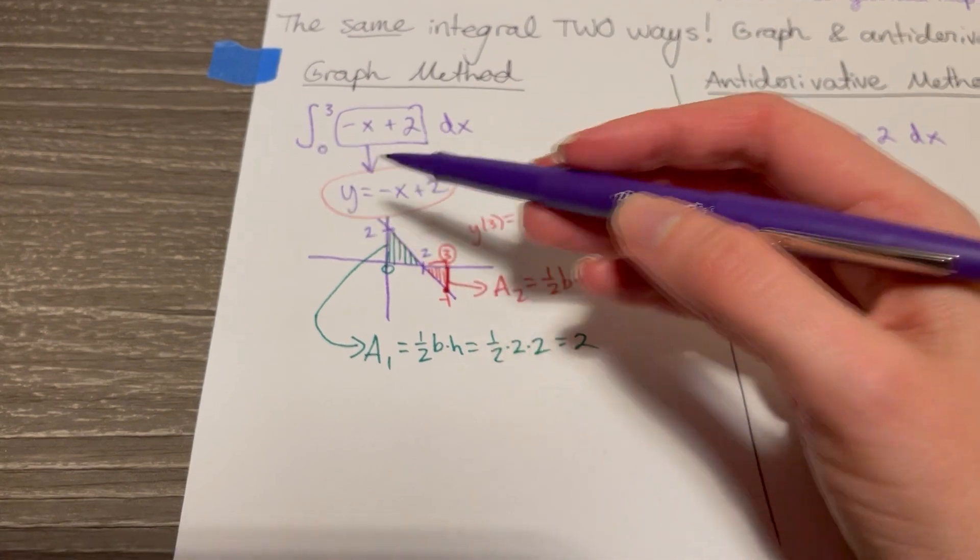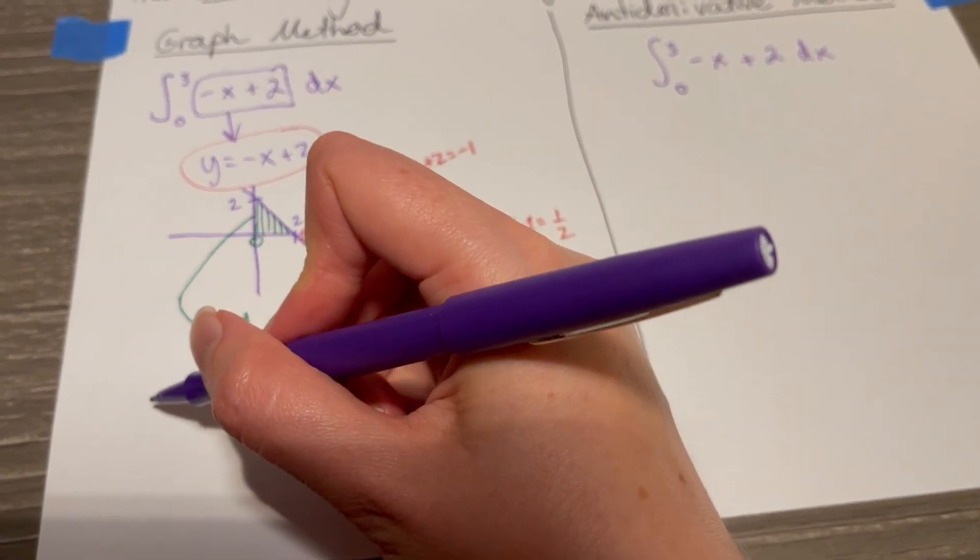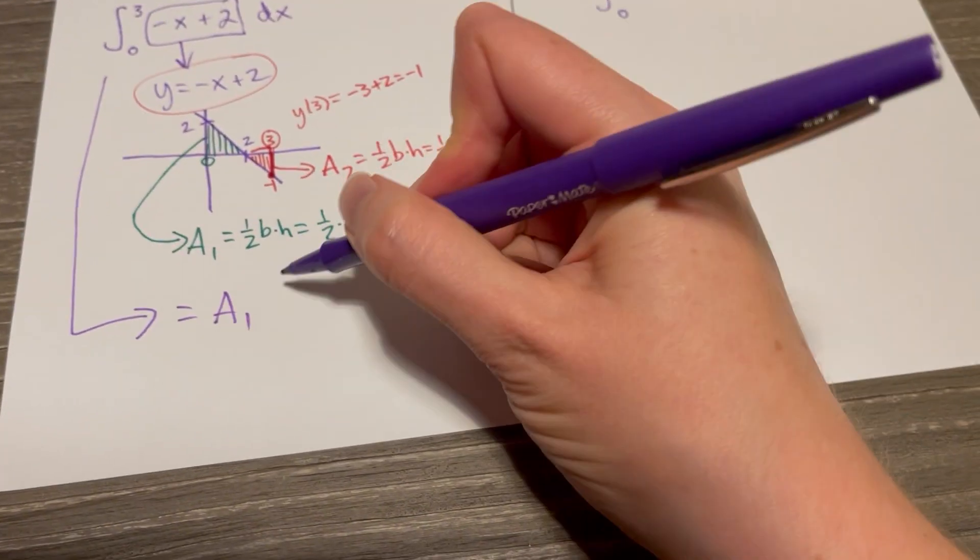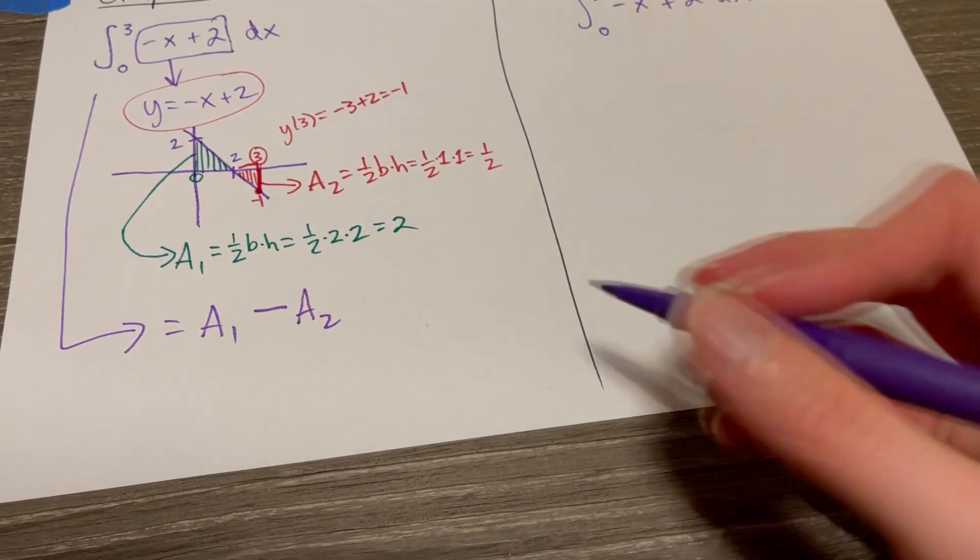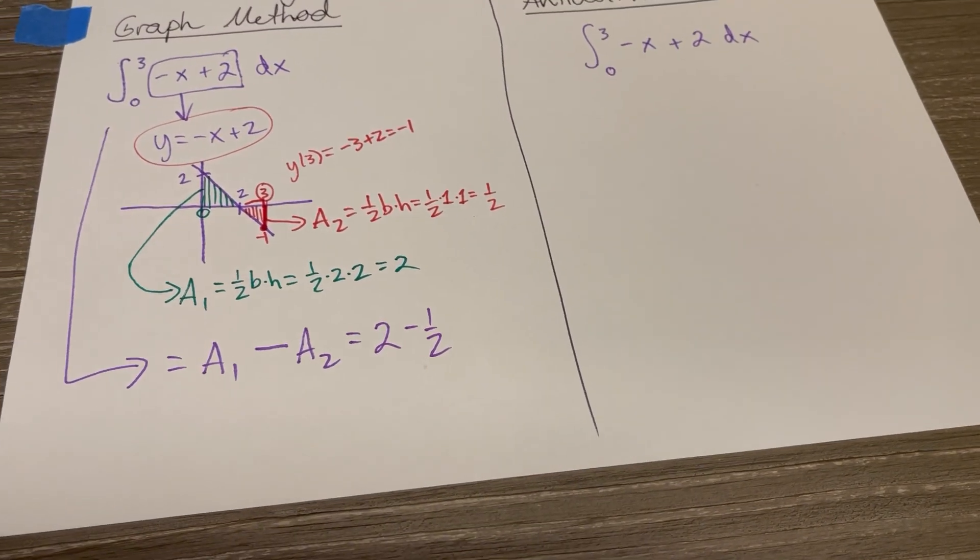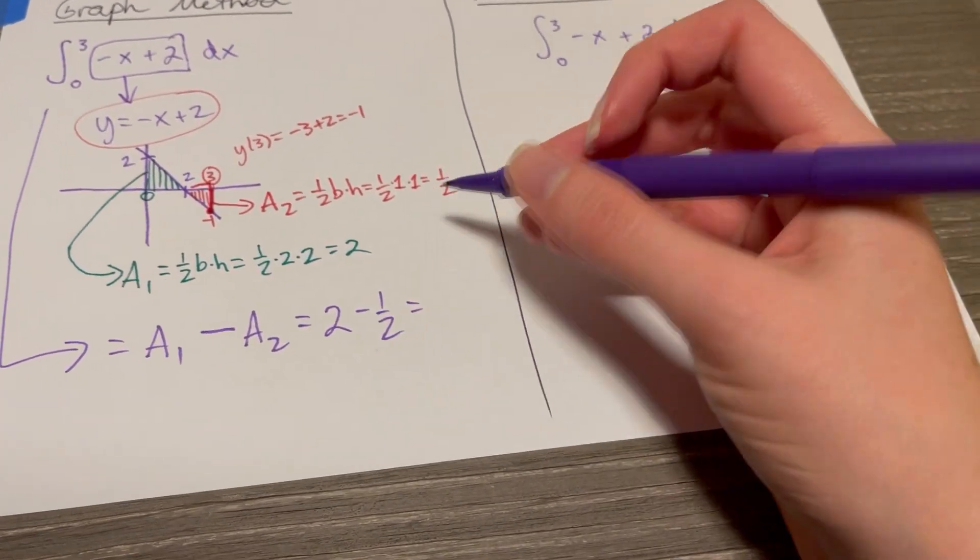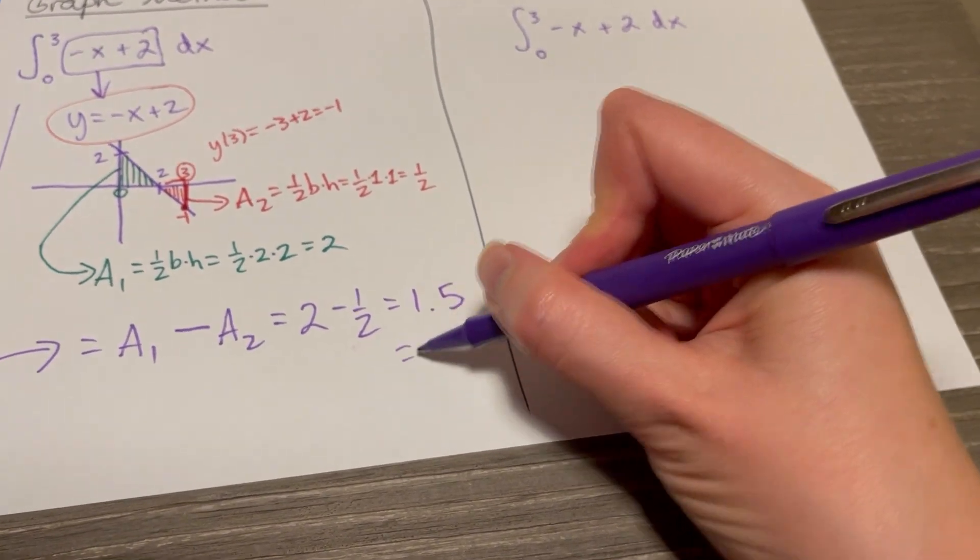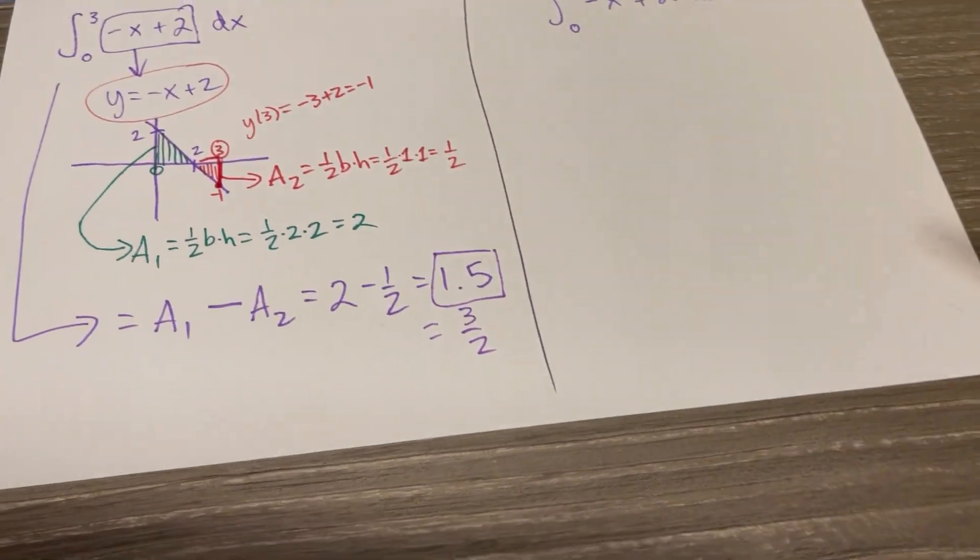So when we find this definite integral using the graph method, we're going to take this area one, which is going to count as positive. This definite integral is going to equal area one minus area two. Area two counts as negative, and so we're going to have positive two minus one half. My cat's just celebrating by scratching. Okay, so one half, subtract one half there, we get one and a half, or three halves if you prefer fractions. Okay, great. So there's our final answer there.